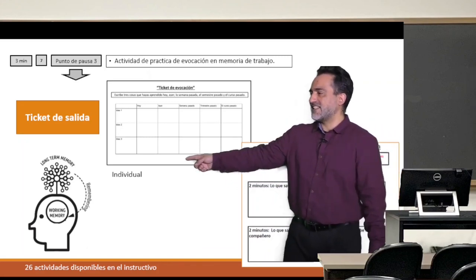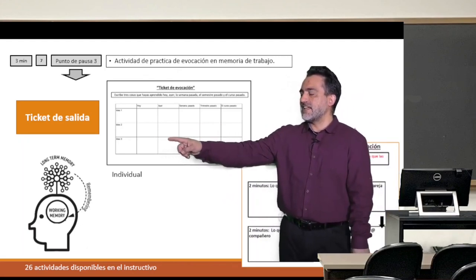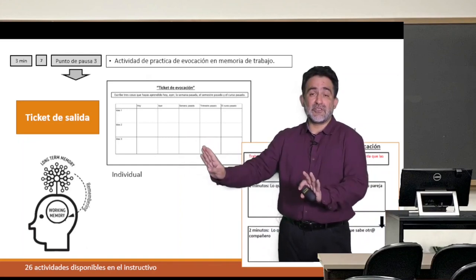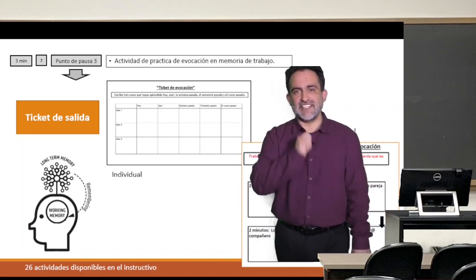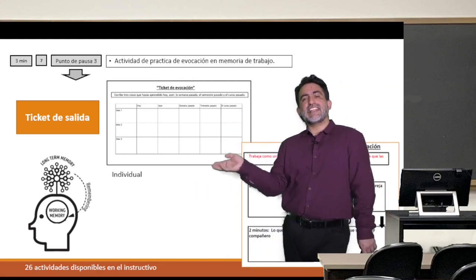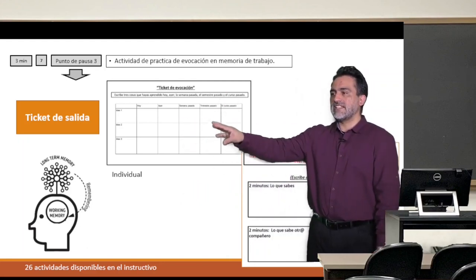For example, this one that's here at the top, which you may not be able to read, which is an exit ticket, and you can implement that even online, where you ask the student what do you remember from a month ago? What do you remember from last week? What do you remember from the previous class? That's one type of exit ticket.